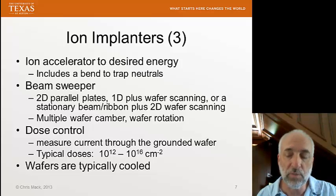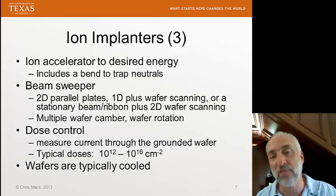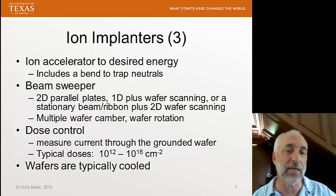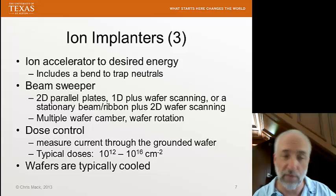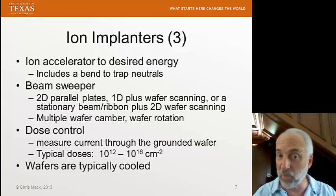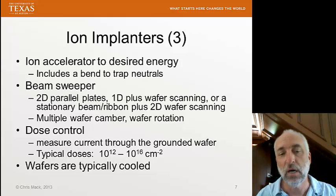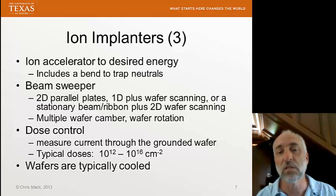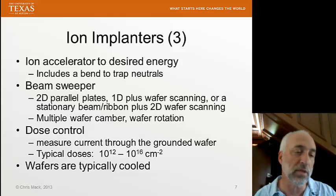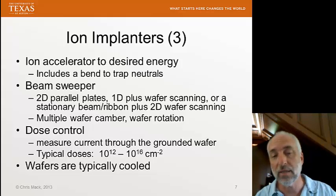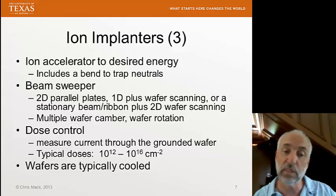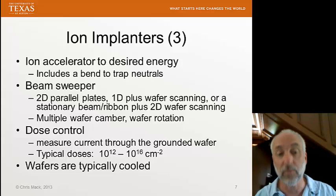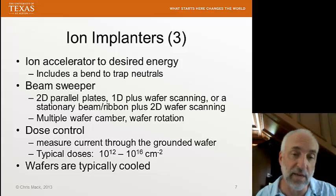Finally, the wafers are typically cooled — we have some cooling going on at the backside of the wafer. The reason is that smashing high-energy ions into the wafer heats it up. All that energy is being dissipated in the wafer, typically at the very top. Sometimes it's photoresist used as a mask to block ions; sometimes it's oxide. These materials could get chemically changed because of the heat, so we cool the wafers to prevent that from happening.